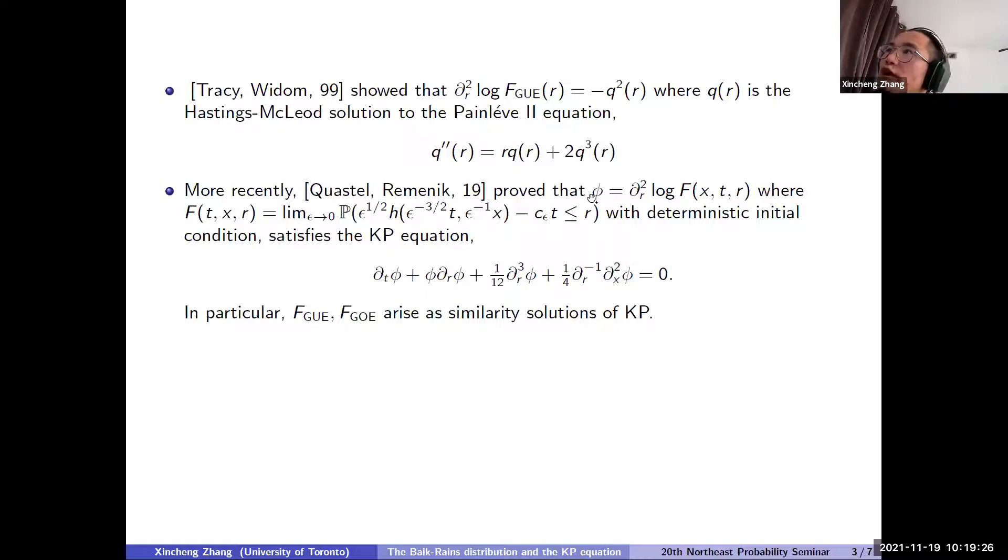And then you define the function φ to be the second partial in R of the log of the function big F. So this φ will satisfy the KP equation. So the KP equation first arises in describing long waves in shallow water. But it seems that there is no similar physical explanation here for the distribution function. So for now, it is still mysterious why the distribution function will satisfy the KP equation. And in particular, the GOE and the GUE distribution arise as similarity solutions of KP.